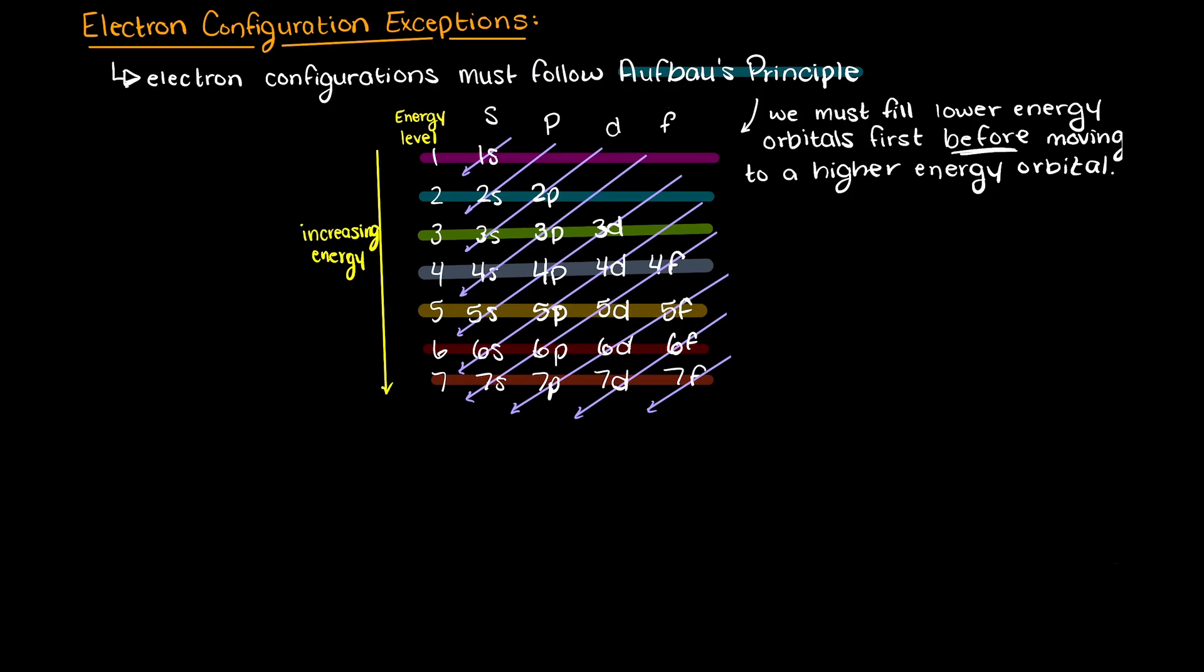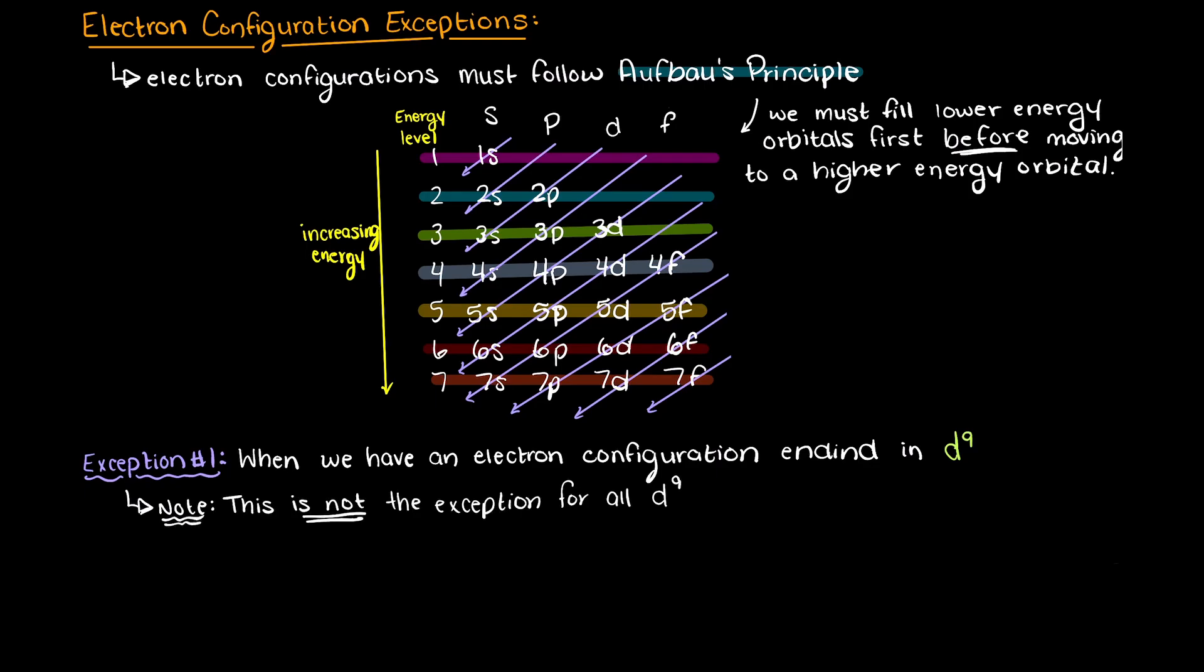There are two primary exceptions to Afbau's rule that will relate to us. Our first exception states that when we have an electron configuration ending in d9, I should preface this by saying it is not all d9 orbitals, it is only for copper, silver, and gold. The reasoning this trend doesn't continue beyond gold in column 11 of our periodic table is a bit more complicated, however if you are curious you can take a quick look on Google for an explanation.